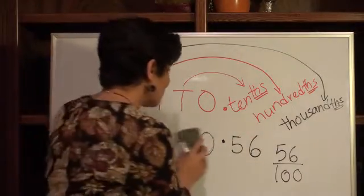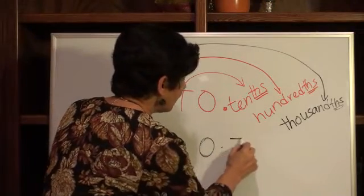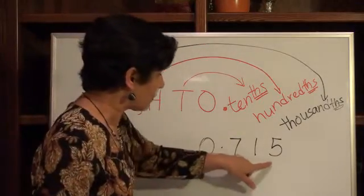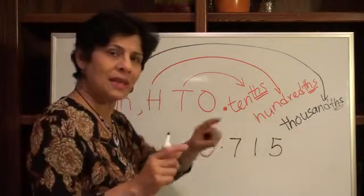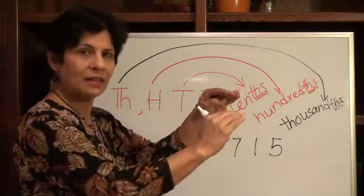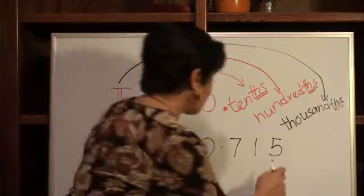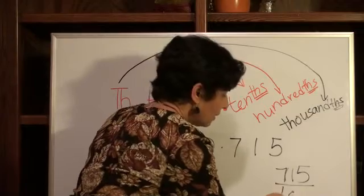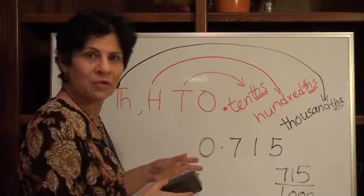Same with the thousandths. If we had a number like [0.715], and we read this as seven hundred fifteen thousandths. Now let's write this as a fraction. Same thing again. You're going to write the number as a numerator, draw your line underneath, and then your denominator is going to be the place value where it's at. So it would be seven hundred fifteen over thousand. That was pretty easy reading those numbers, wasn't it?